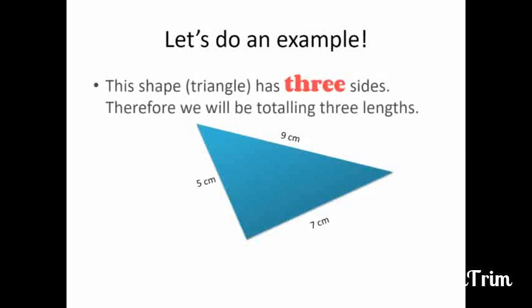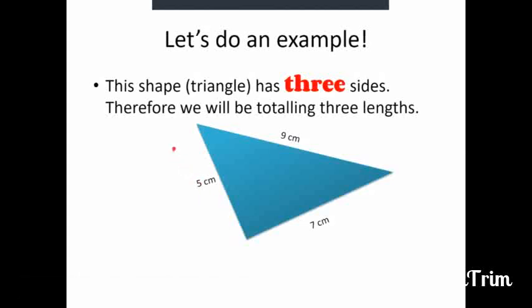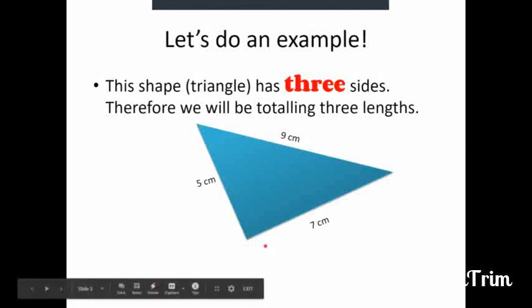Say this shape, which is a triangle, has three sides. Therefore, if it is the total distance taken around a closed figure, then we will be totaling the lengths around this closed figure. So we will be adding 9 cm plus 7 cm plus 5 cm.